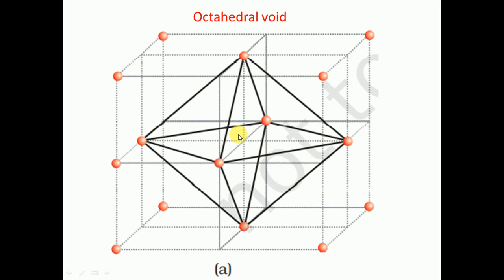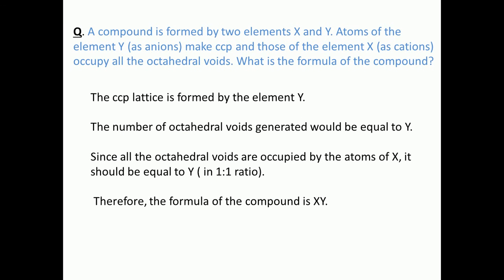Now we will solve a question. A compound is formed by elements X and Y. The atoms of element Y, which are the anions, form a cubic close-packed (CCP) structure. The atoms of element X, which are the cations, occupy all the octahedral voids. We need to find the formula for the compound.